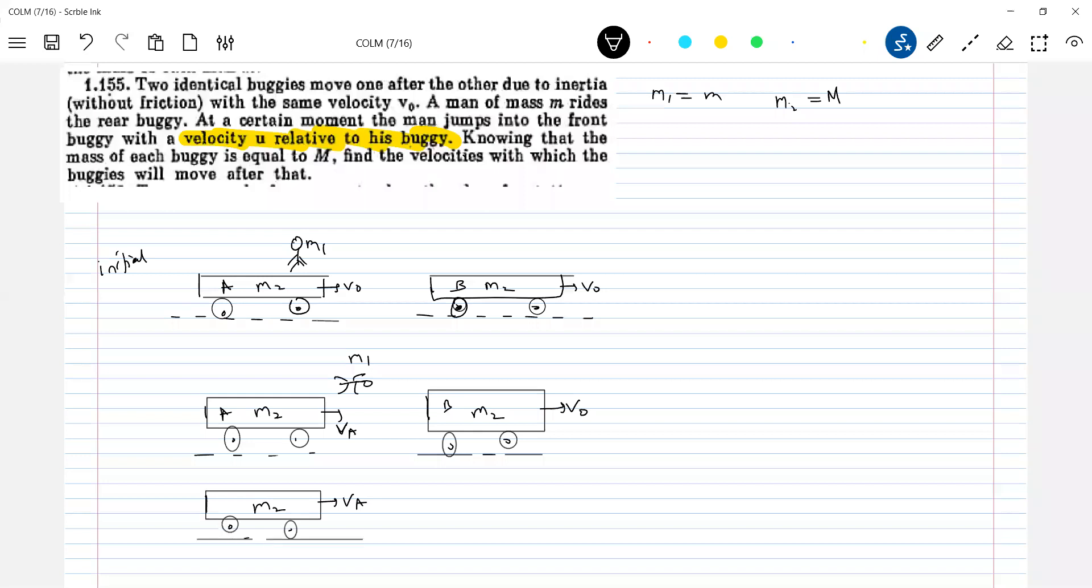Now what will happen to other person? He will land onto this trolley. Let him land here. This is vB. He is asking to get that vA and vB.